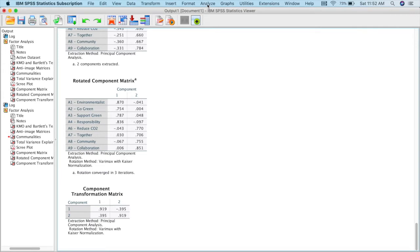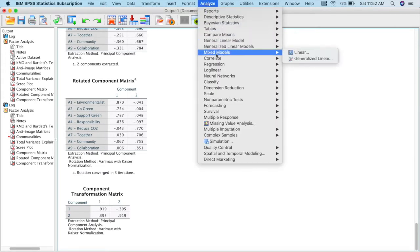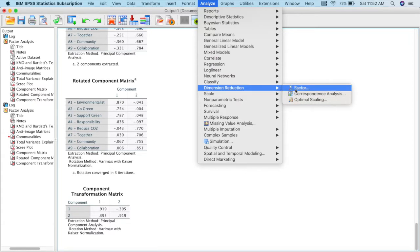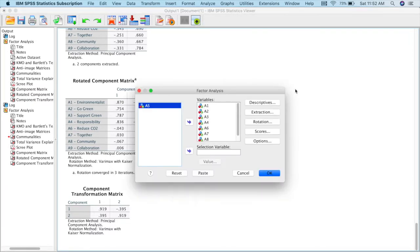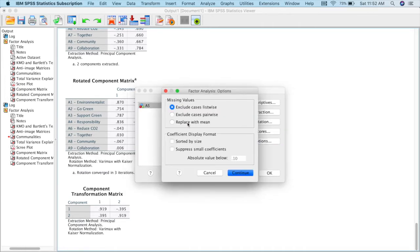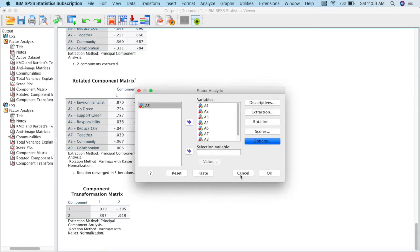You go to this part here: Analyze, Dimension Reduction, Factors, and you go to the last part here which is Options. At the Options here, you go to this section which is Coefficient Display Format. You tick on Suppress Small Coefficient. The absolute value here we will set to 0.4, and we click Continue and OK.